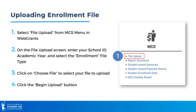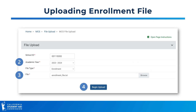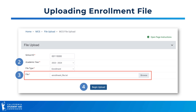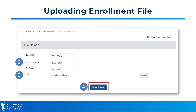Now let's walk through the enrollment file upload process. There are four steps to successfully upload an MCS enrollment file to CSAC. First, log into WebGrants for Institutions and select File Upload under the MCS banner. On the MCS file upload screen, enter your school's eight-digit school code and select the appropriate academic year. Be sure to select Enrollment under File Type. Click either Choose File or Browse to select your pre-formatted data file, then click Begin Upload.